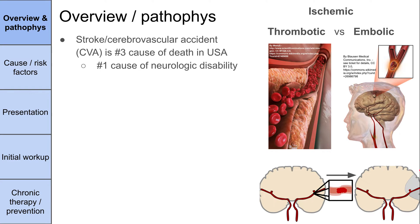An embolic stroke is when an embolus — a piece of debris that's come from somewhere else in the body — ends up lodged in a blood vessel and occludes blood flow, so tissue downstream is going to infarct and die. Embolic strokes can come from a variety of sources, including a heart valve, atrial fibrillation, or even from a DVT in a very specific case.